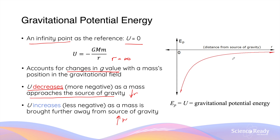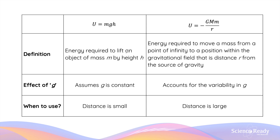This should make sense logically because when you have a point that's infinitely far away from any source of gravity, there shouldn't be any potential energy due to gravity at that point. This equation is preferred over u equals mgh because it accounts for the changes in the g value when the mass is brought over a large distance in a gravitational field. On the graph, the relationship between distance r and the gravitational potential energy (denoted ep) is a hyperbolic one — the two are inversely proportional. As r increases towards infinity, the value of u or ep increases and approaches zero. Vice versa, as r decreases, the value of ep decreases and becomes more negative.